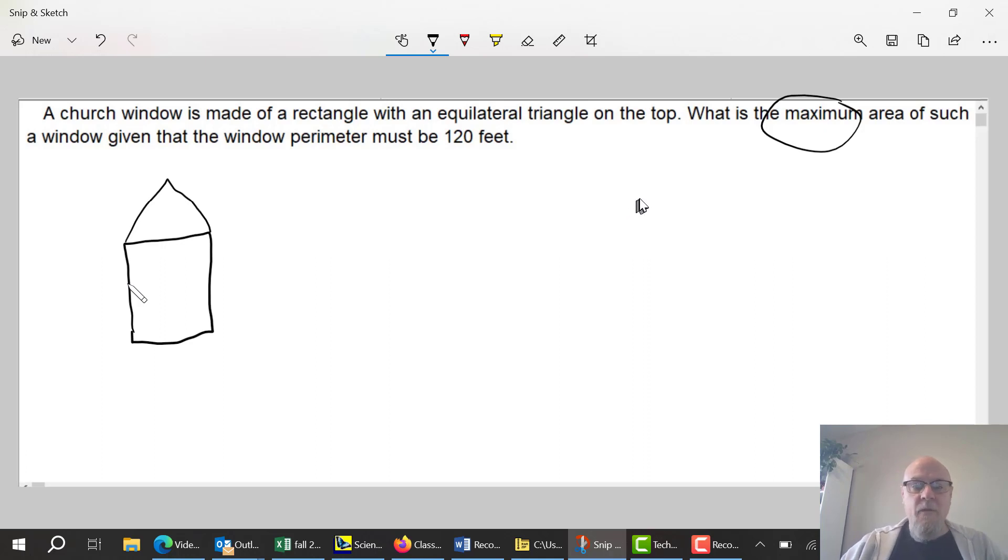So we got to write out the function that we're going to maximize or minimize. So this is an equilateral triangle, so that's going to be X, that's going to be X, that's going to be X, and all the angles here are 60 degrees. This triangle, then, or this rectangle - this will be X, Y, this will be X here, this will be Y.